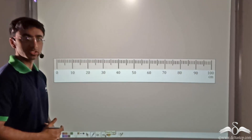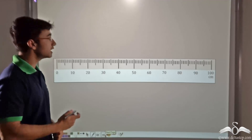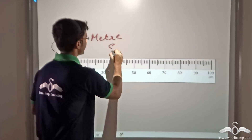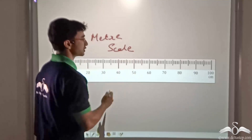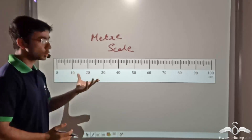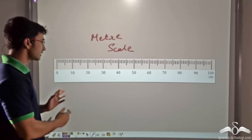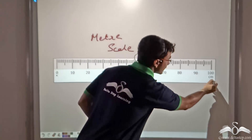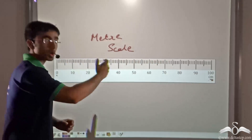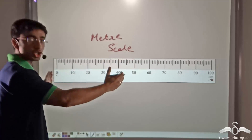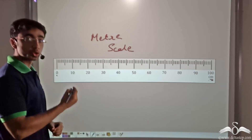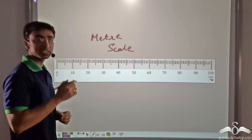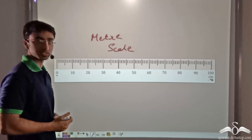You can measure the length of this table using what is known as a meter scale. In this picture, you will find a meter scale has been depicted. If you look closely, you will see that there are marks starting from zero and ending at hundred. So zero to hundred centimeters is the length of the meter scale, and this range has been divided into smaller parts.